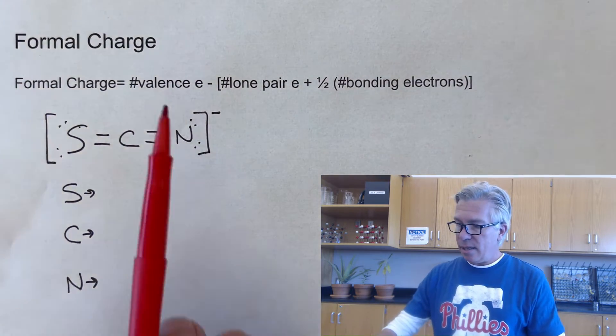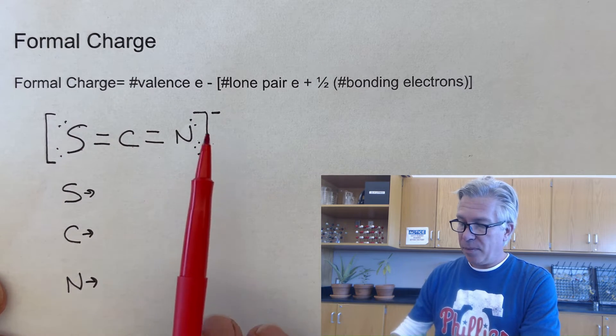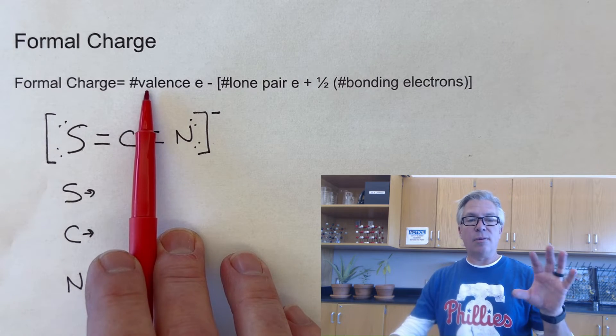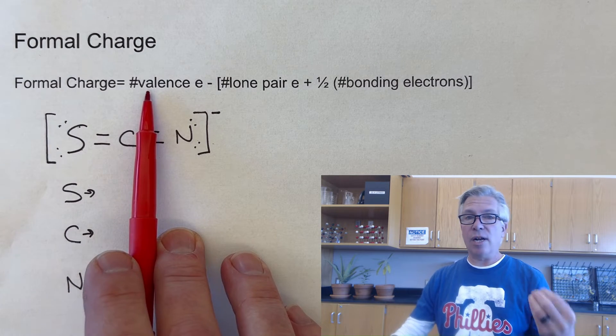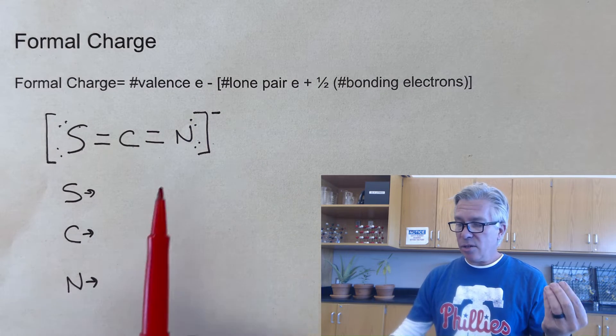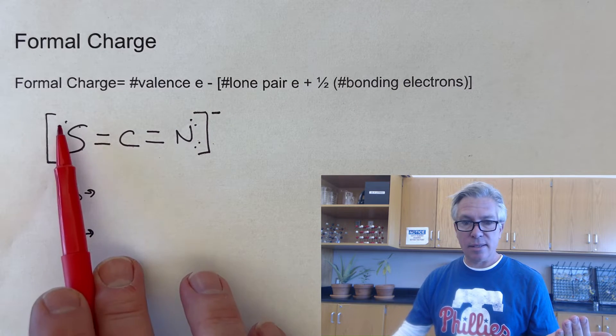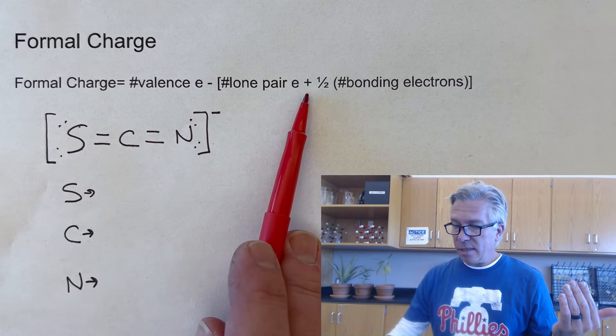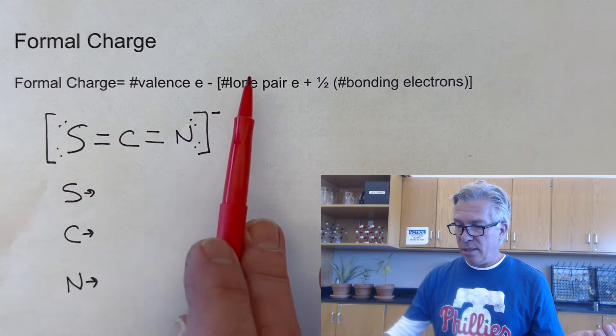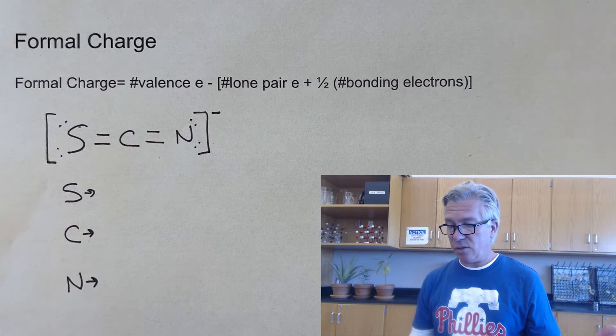If you wanted to assign the formal charges to atoms that are in a molecule, the way you do it is you start with the number of valence electrons the atom would begin with as you grab it off the periodic table to put it in a molecule like this. And then you're going to subtract the number of lone pair electrons that it has plus one half of the bonding electrons that it has. So you're adding these and then subtracting it from the original amount of valence electrons.